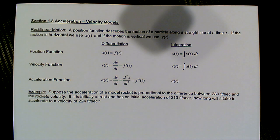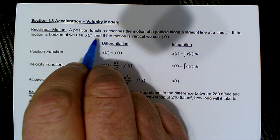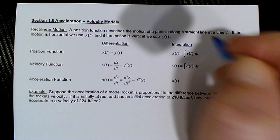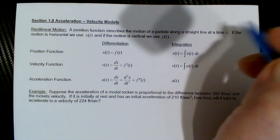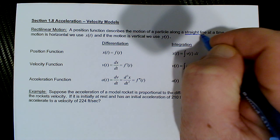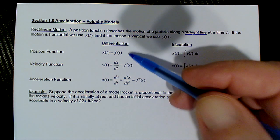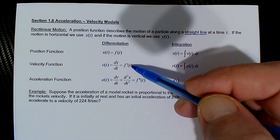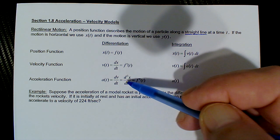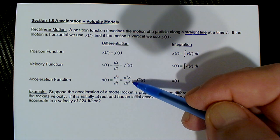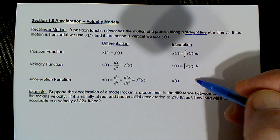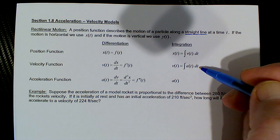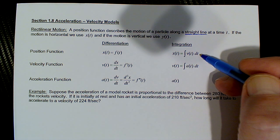This is section 1.8: acceleration and velocity models and rectilinear motion — motion in a straight line. We use x(t) for horizontal and y(t) for vertical one-dimensional motion. Starting with position, you can obtain velocity as the derivative of position and acceleration as the derivative of velocity — or working backwards, integrate acceleration to find velocity, and integrate velocity to find position.